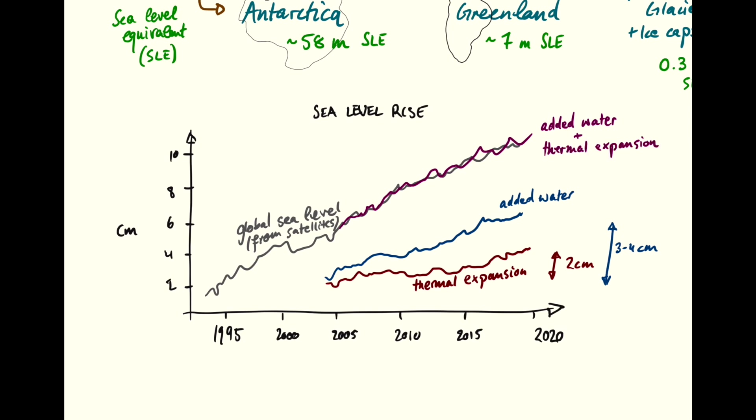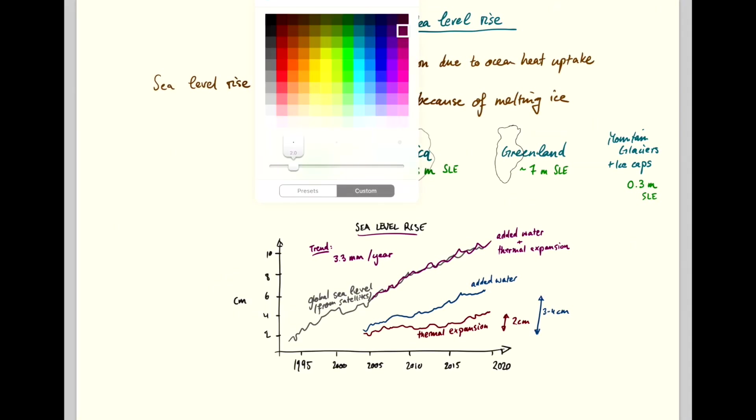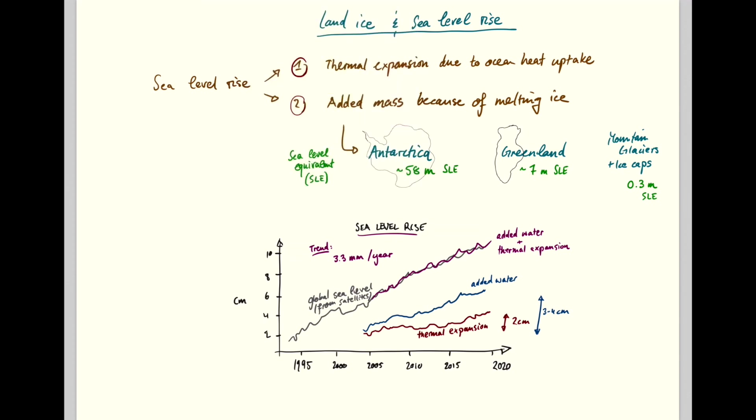And the general trend has been, over the last 20 years, about 3.3 millimeters per year of sea level rise. And this graphic is based on data from NOAA, the Ocean and Atmosphere Administration, which you can access at climate.gov.